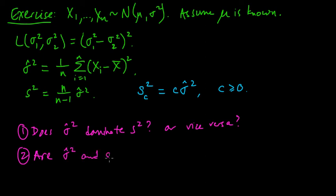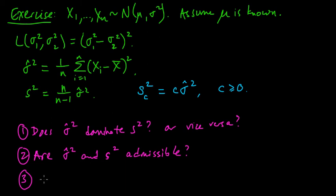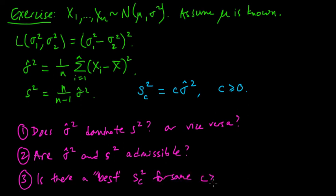Second: are sigma-hat squared and s squared admissible? And third, thinking about s_c² as c ranges over non-negative numbers — is there a best s_c² for some c? In other words, is there some choice of c that gives you a best s_c²? And if you can find that, does it coincide with one of these?